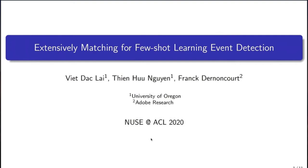In this paper, we consider event detection under few-shot learning setting and propose two training signals to improve performance of few-shot event detection.